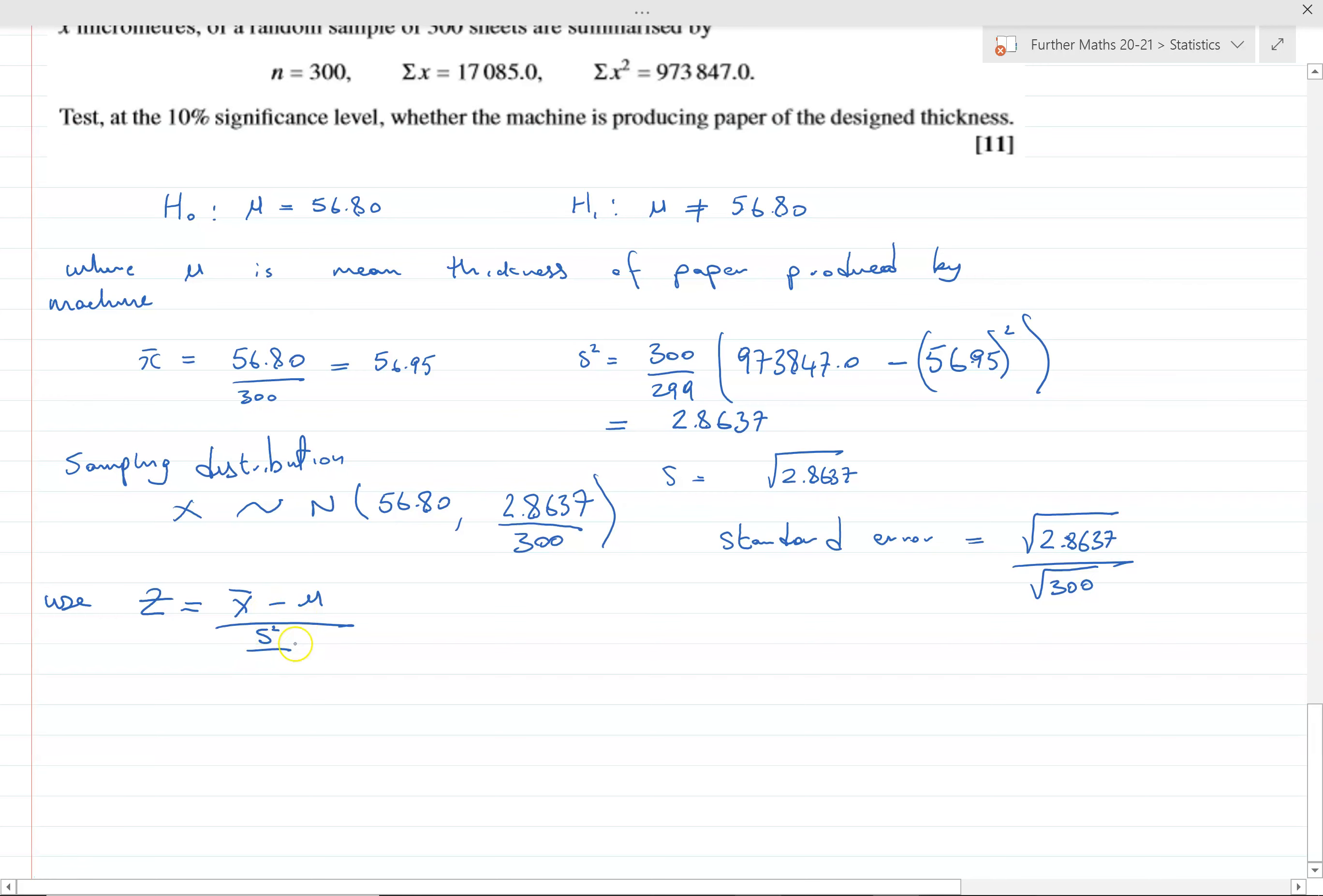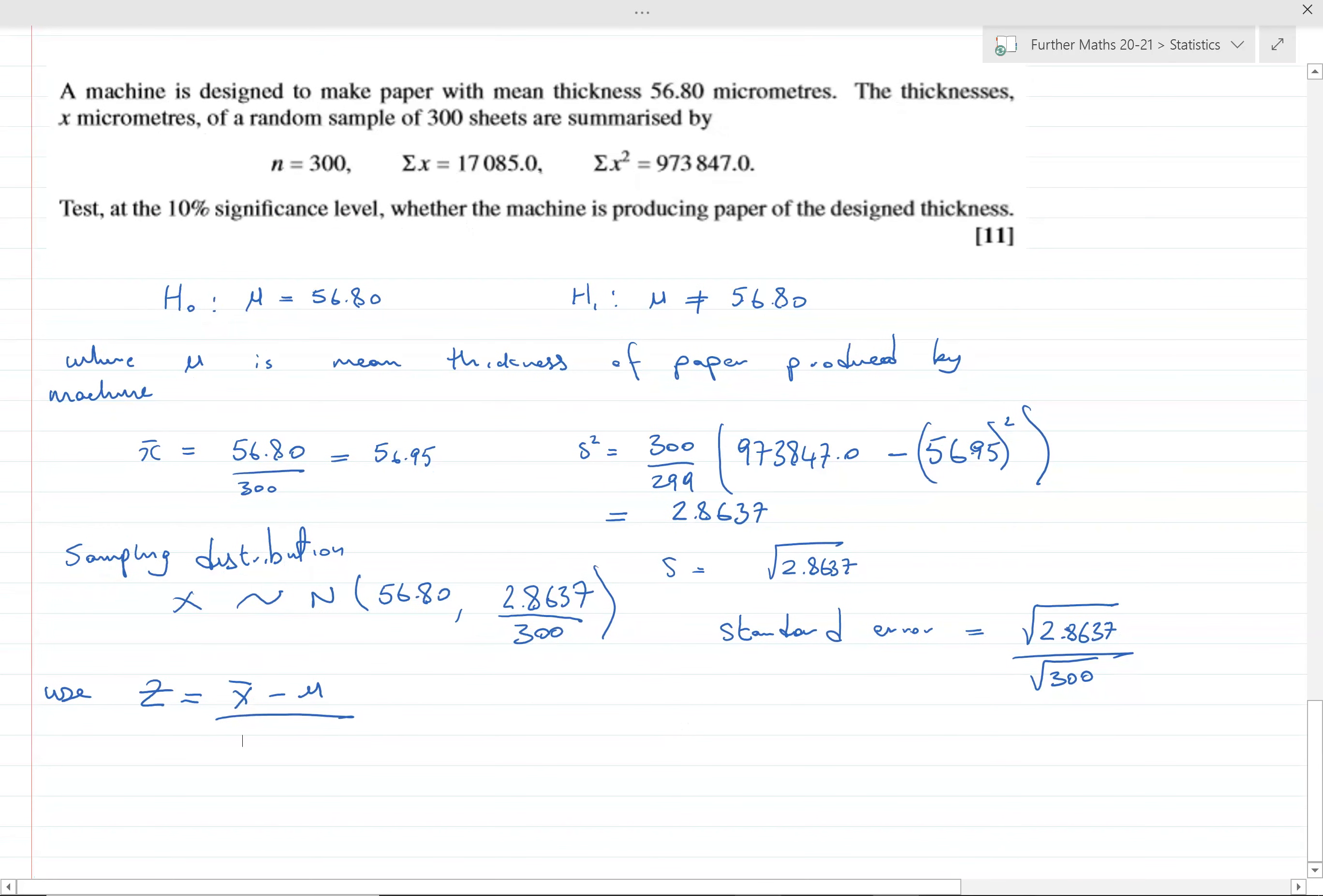We don't know the standard deviation, but because the sample size is big enough we're going to use our estimator for it, so that's s² over √300. For those who've done t-distribution, you might think this is a case where you should use it, but we don't really need to when the sample size is so big. We can't use a t-test anyway because it's not normally distributed originally, so we're using the central limit theorem.